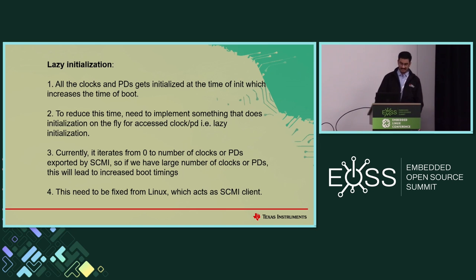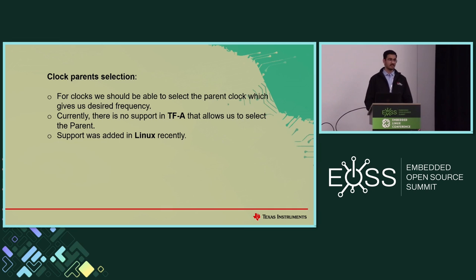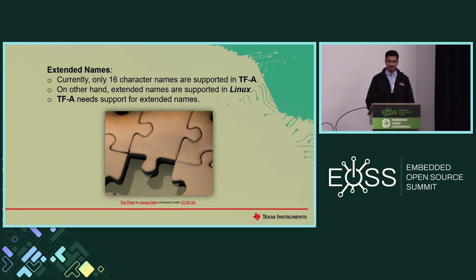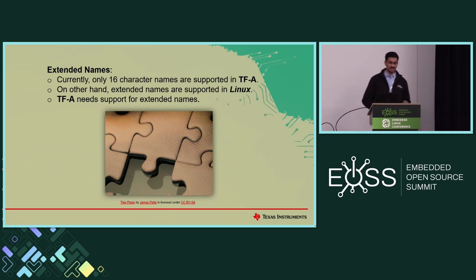Then there's clock parent selection. For clocks, we should be able to select the parent clock, but currently inside TFA there's no support for this. However, inside Linux, support was added recently — so at least half of the problem is solved. Another important issue is that TFA only supports 16-character names today. However, as you know, SOCs are incredibly complex and names tend to get really long sometimes. Even though Linux supports extended names and so does the protocol, TFA still needs to add support for this.